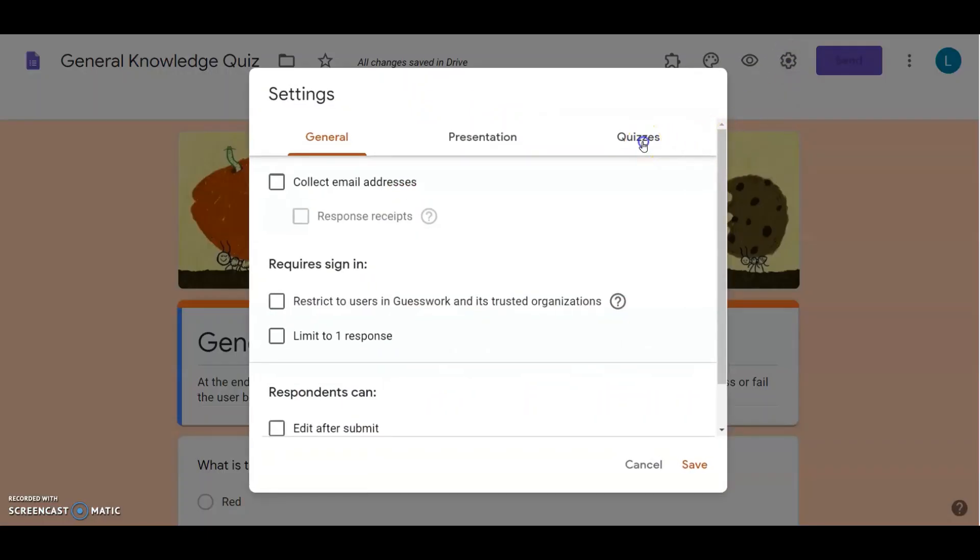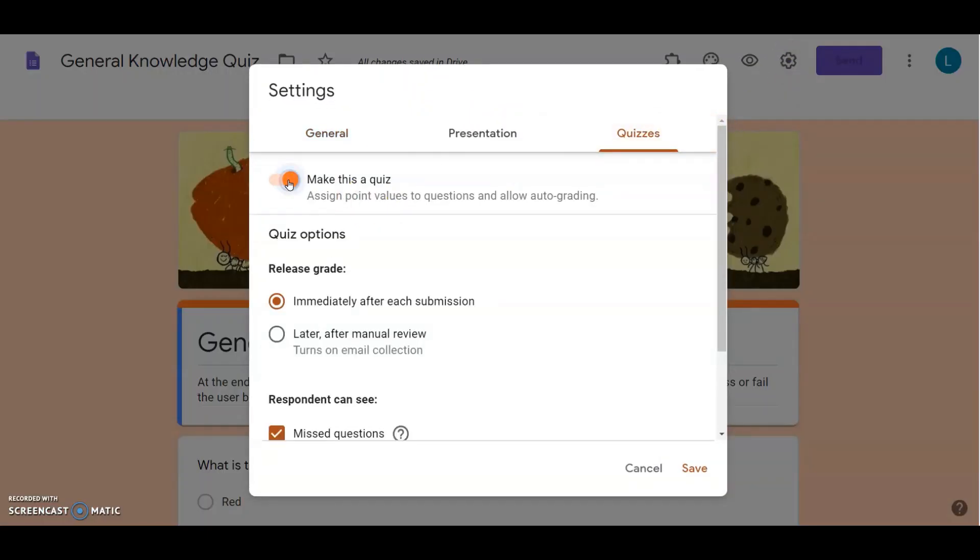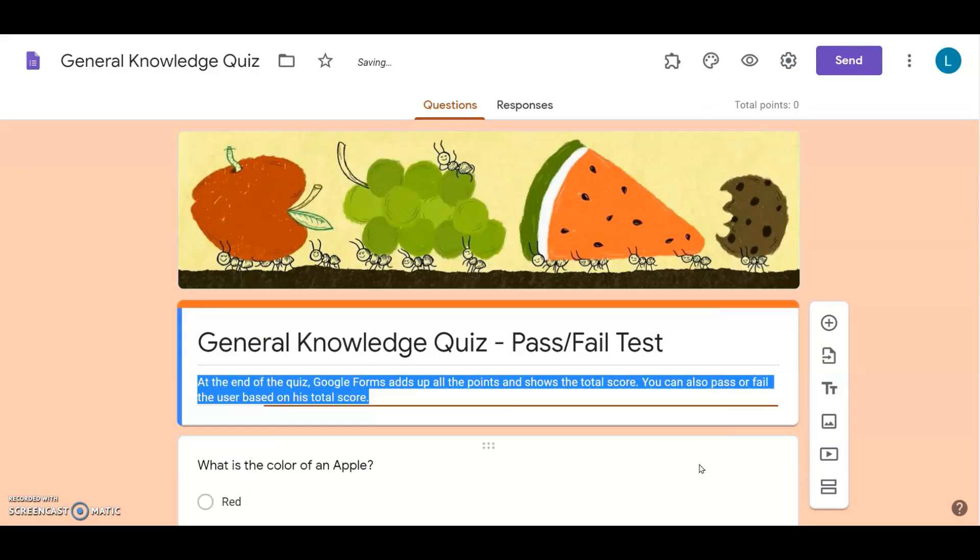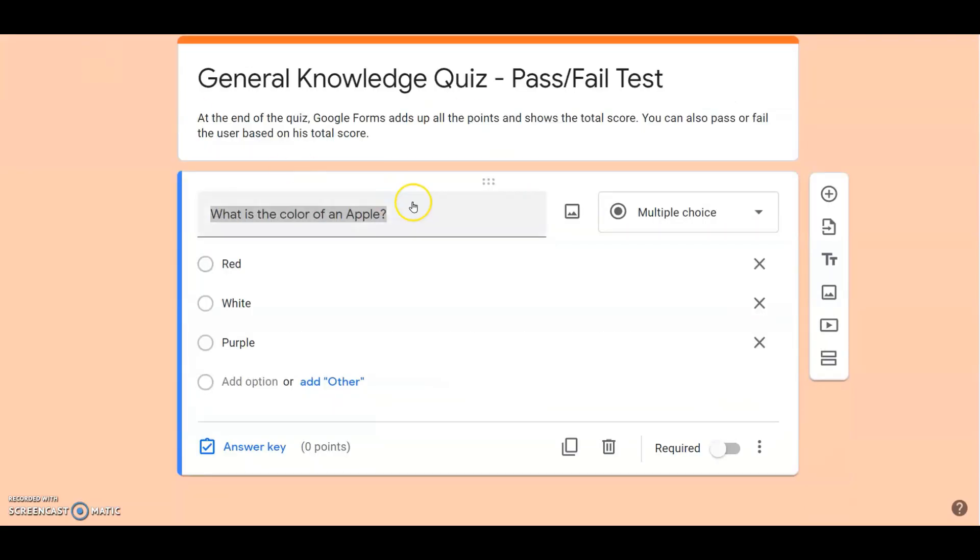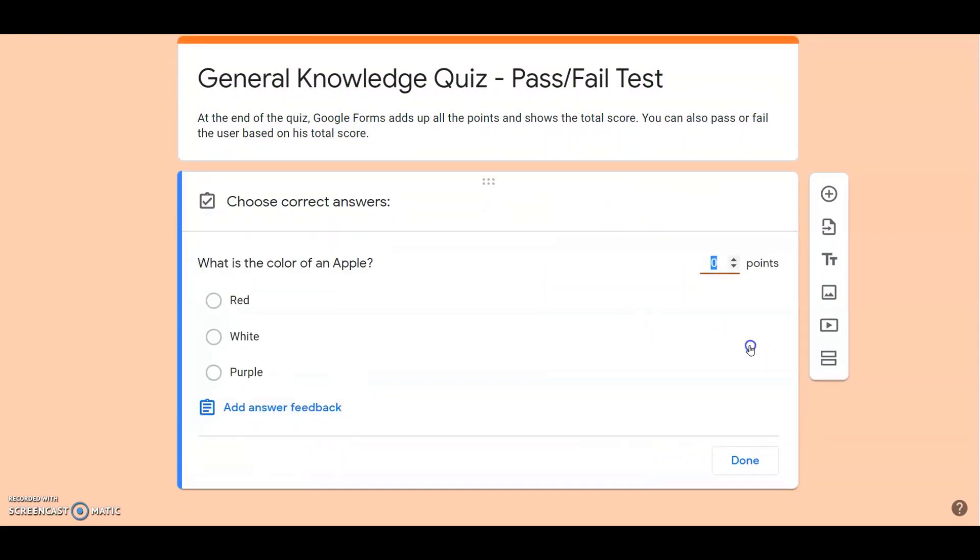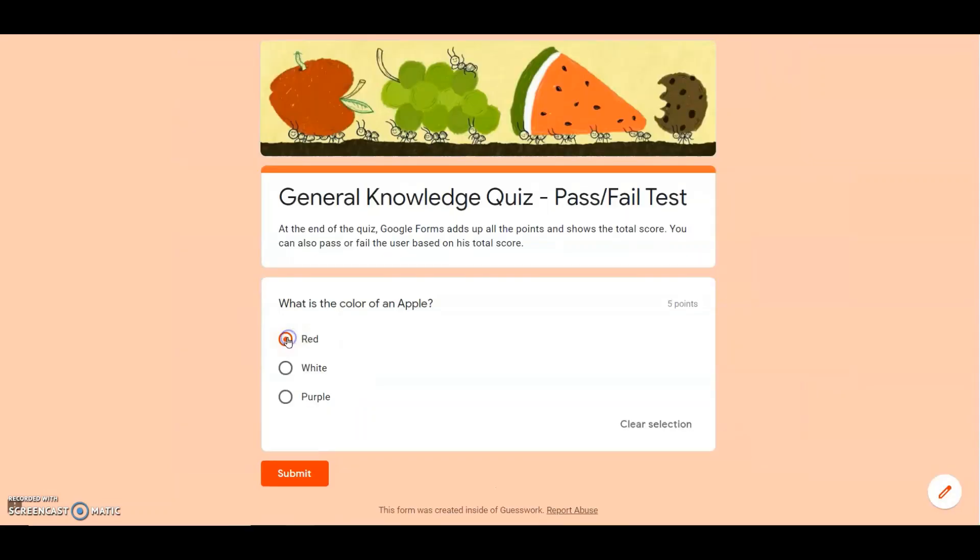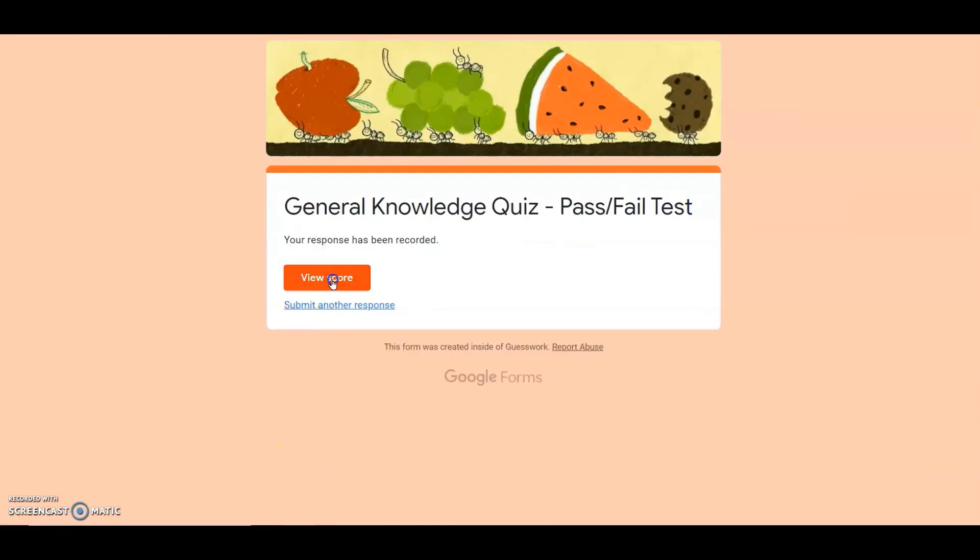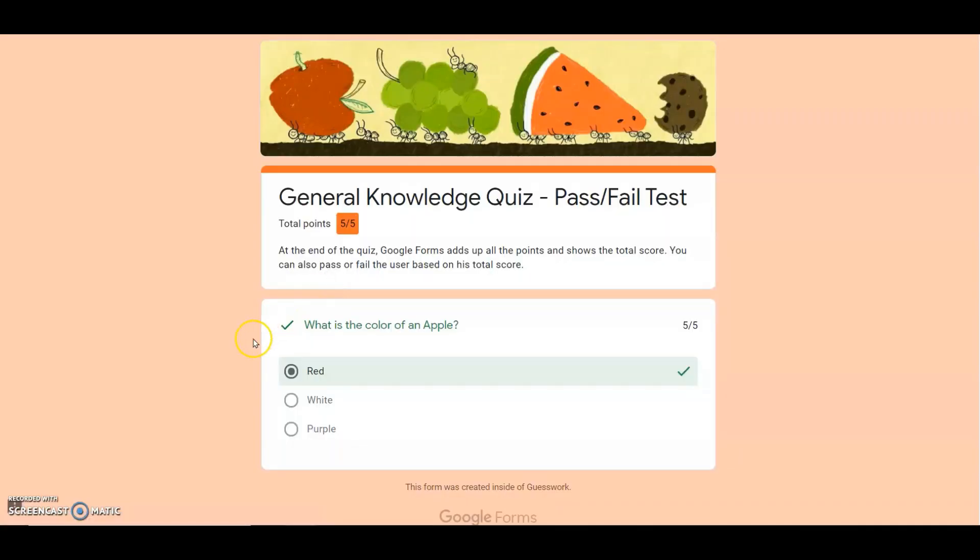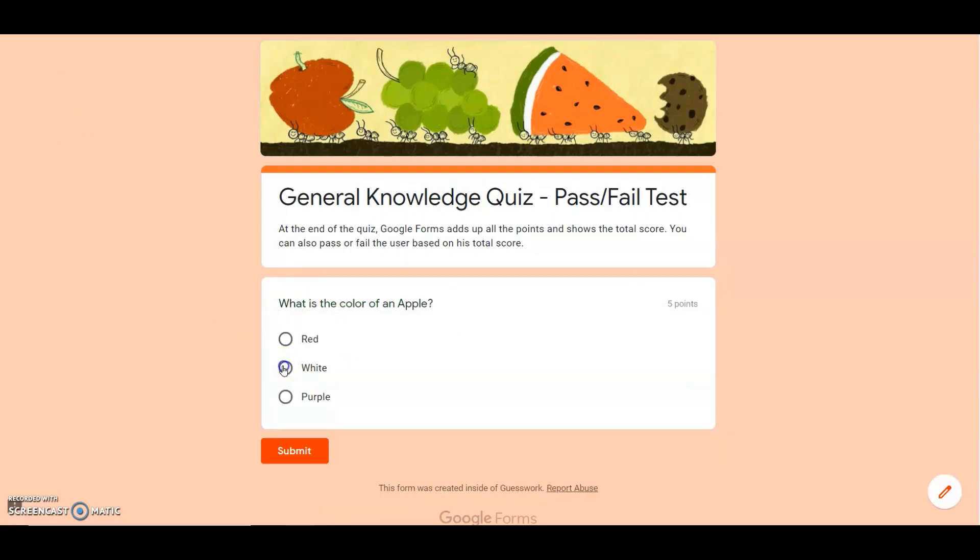Making a quiz in Google Forms is easy. I can ask a question like what is the color of an apple and assign points to the correct answer. Say five points for the red color. If the user selects red, they will get five points. If they select other colors, they will get zero points.